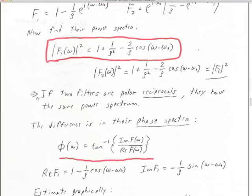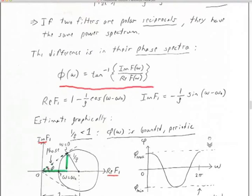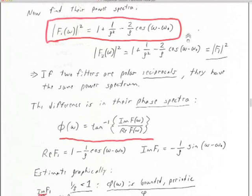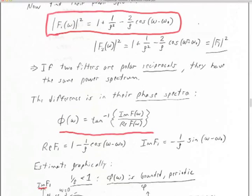So right away we see that if two filters are polar reciprocals, they have the same power spectrum. These two filters are different — one has the zero outside the unit circle (minimum phase) and one has the zero inside (not minimum phase and not usefully invertible) — yet their power spectra and amplitude spectra are the same. Where's the difference? The difference is in the phase spectra.